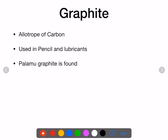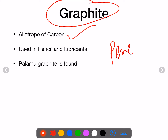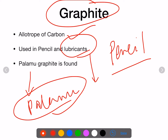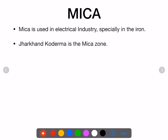Graphite is an allotrope of carbon and is used in pencils and as a lubricant. In Jharkhand, Palamu is the reserve for graphite — you find graphite in Palamu.